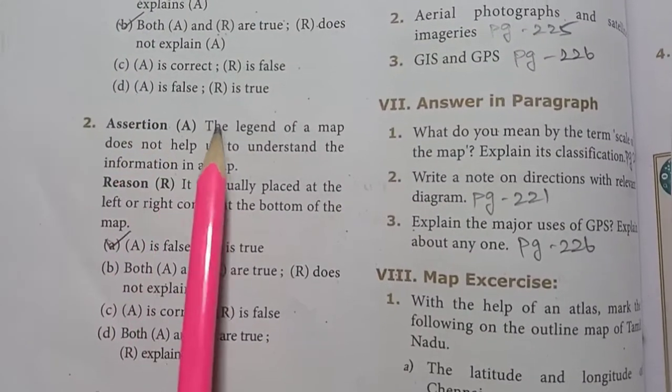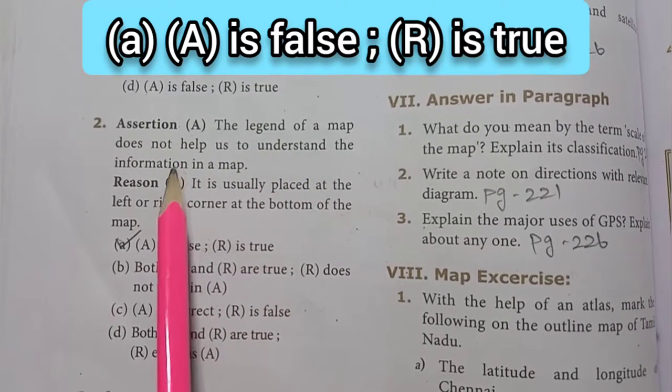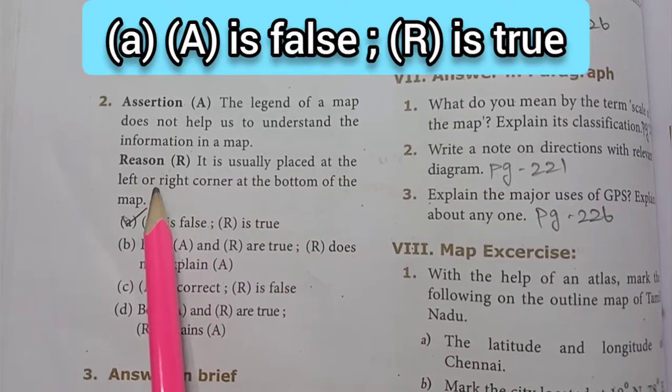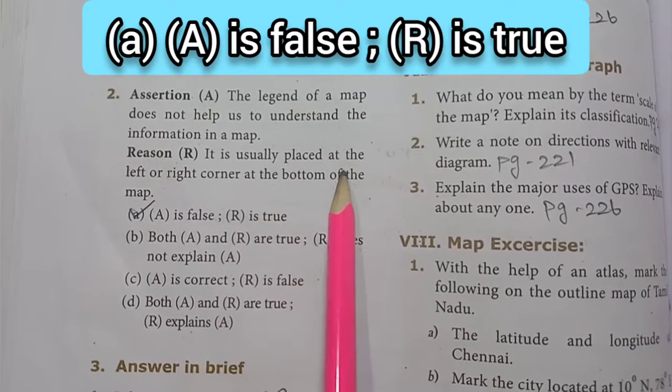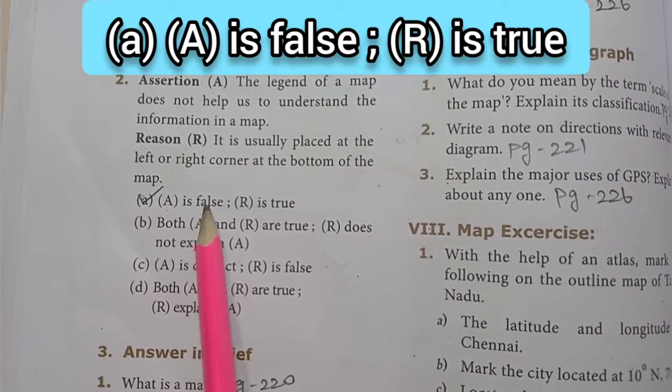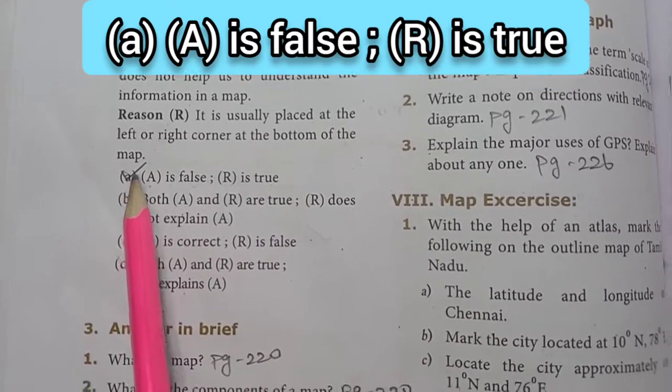Second assertion: the legend of a map does not help us to understand the information in a map. Reason: it is usually placed at the left or right corner at the bottom of the map. Answer is A option. Assertion is false and reason is true.